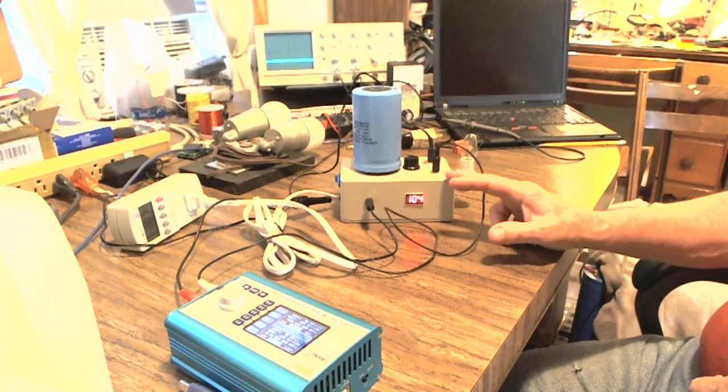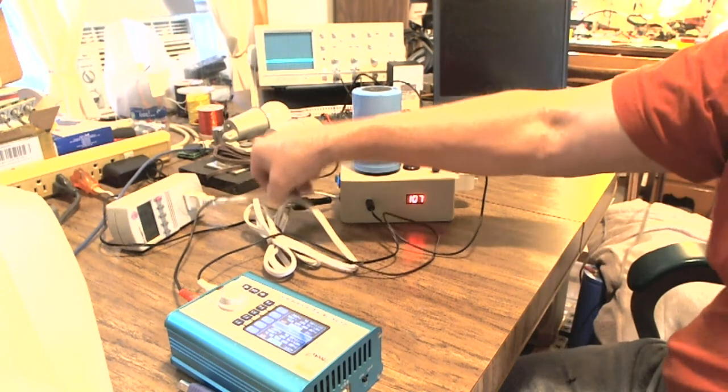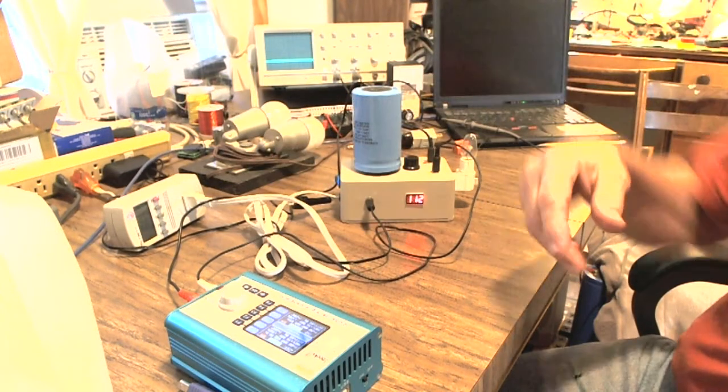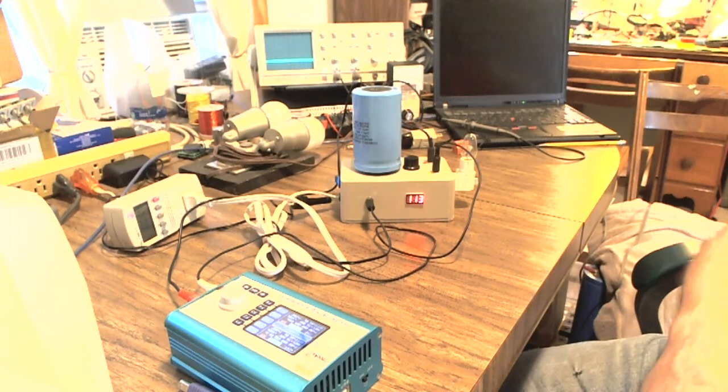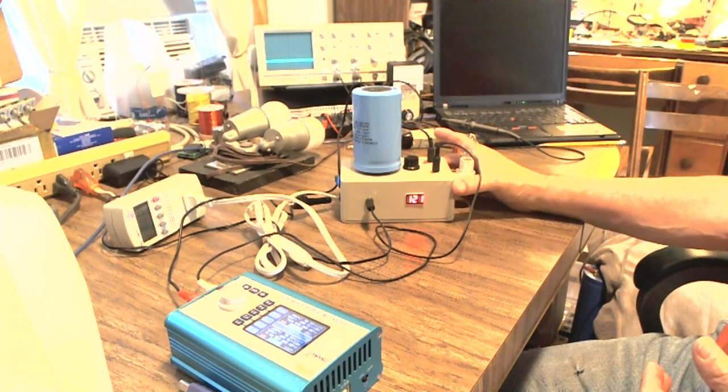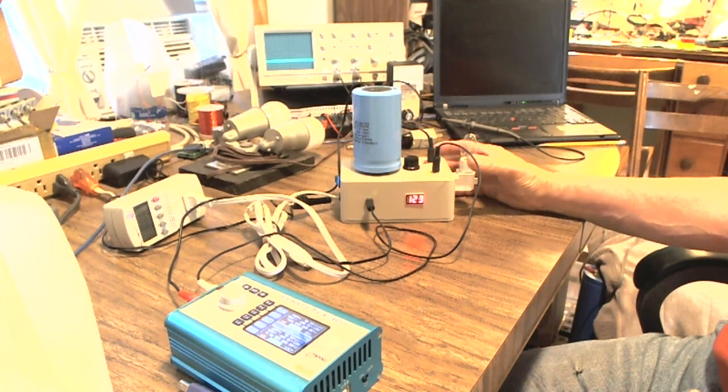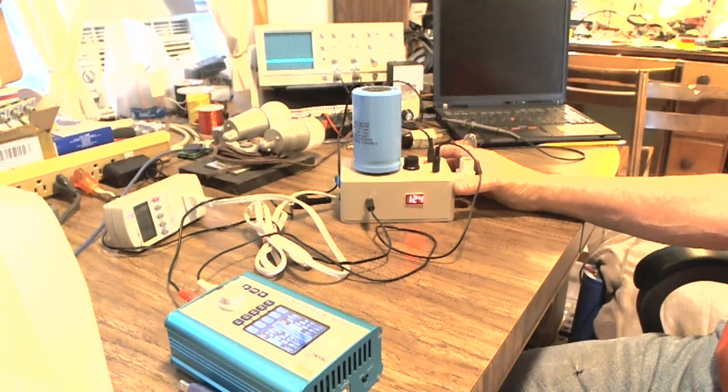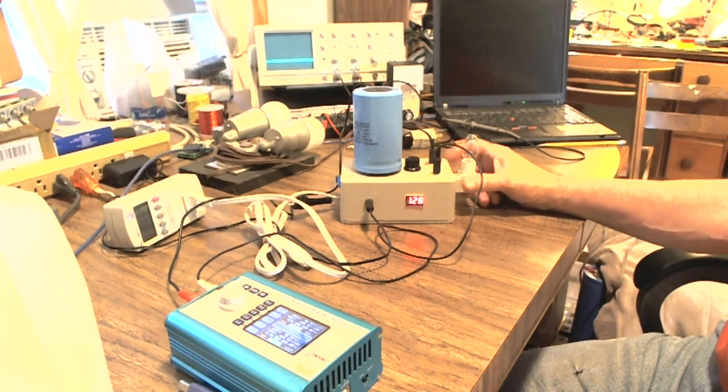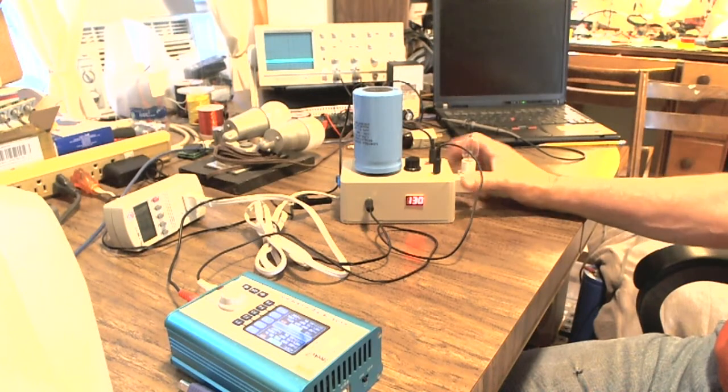So what the frequency converter does, it changes the 60 cycle AC coming in from this line here, the plug, the AC wall plug, the one that you would plug into a wall outlet, and changes the frequency of the 60 cycle AC to anything you want. But it's no longer a nice sine wave AC. It's a square wave AC.